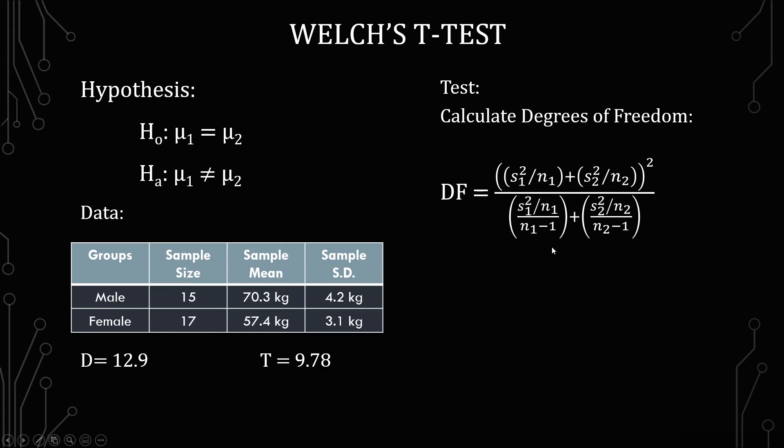You get 1.176 plus 0.565 all of that squared divided by 1.176 over 14 plus 0.565 over 16. And so this simplifies that calculation really fast. So you don't have to go about putting this in your calculator in the most extended way possible.